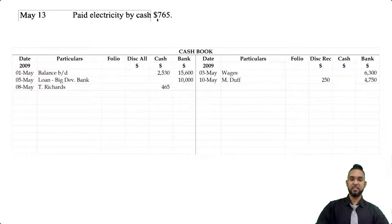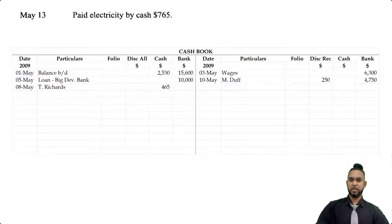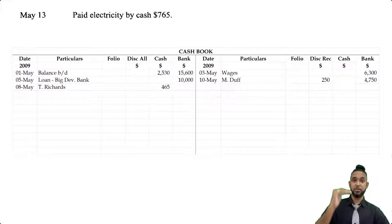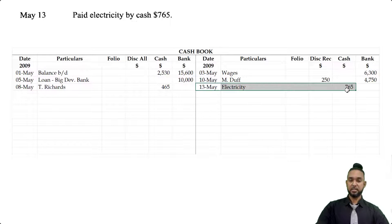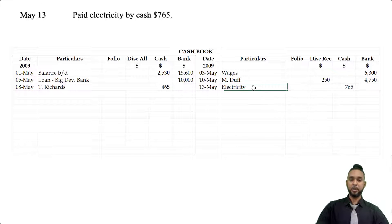On the 13th, we have paid electricity by cash, $765. If it's a payment, our money is going down. We paid by cash, so cash is decreasing. To record a decrease in an asset, you have to credit the asset account. So you're going to see on the credit side of the cash book, under the cash column, $765 — paying electricity on the 13th of May.